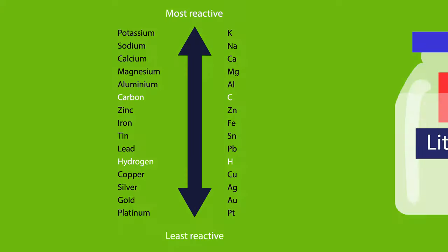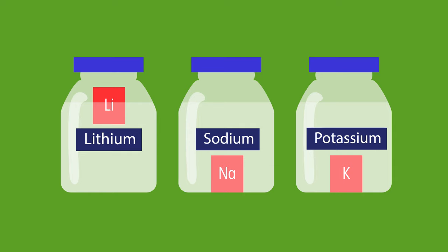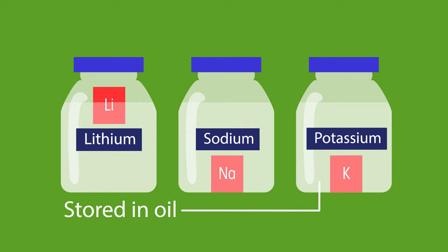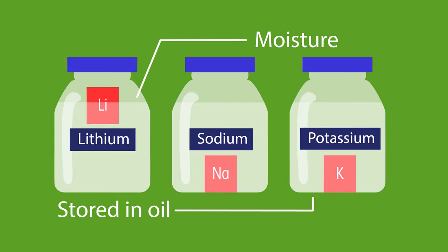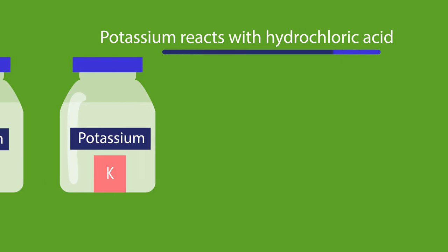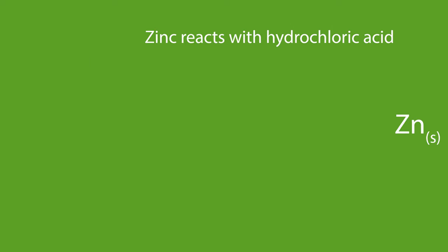You may already have known that lithium, sodium, and potassium were at the top of the list, since we store these metals in oil to stop reaction with moisture in the air. When potassium reacts with hydrochloric acid, potassium readily loses an electron to form the K⁺ ion.